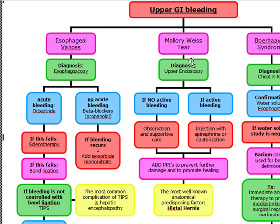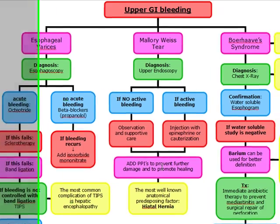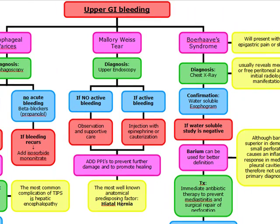To recap Mallory-Weiss tear: diagnose with upper endoscopy; no active bleeding means observation and supportive care; active bleeding means epinephrine injection or cauterization. Both groups receive a PPI. The most well-known anatomical predisposing factor for Mallory-Weiss tear is a hiatal hernia.